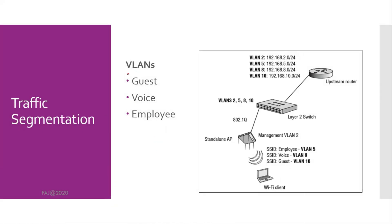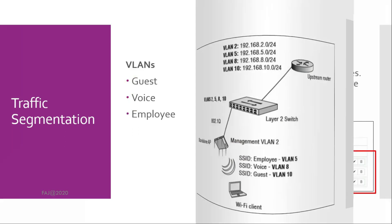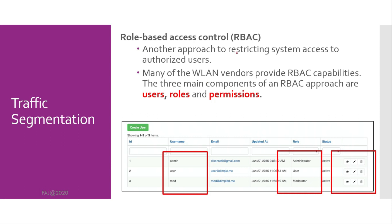Traffic segmentation can be achieved through a variety of means, including firewalls, routers, virtual private networks, and virtual local area networks. VLANs are used to create separate broadcast domains in a layer 2 network and are often used to restrict access to network resources without regard to physical topology. A common strategy is to create a guest, voice, and employee SSID/VLAN pair. Role-based access control (RBAC) is another approach to restricting system access to authorized users. The three main components of an RBAC approach are users, roles, and permissions.